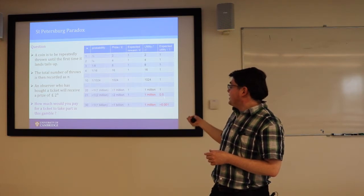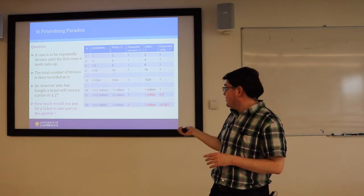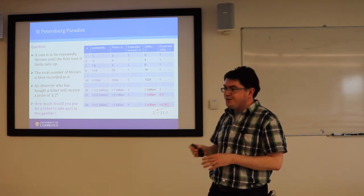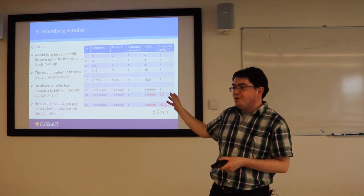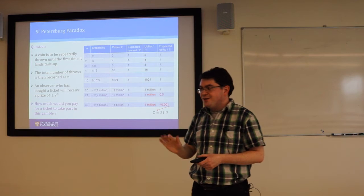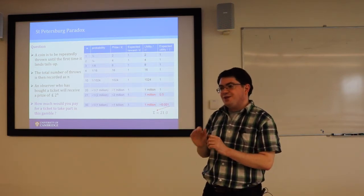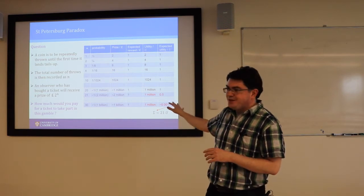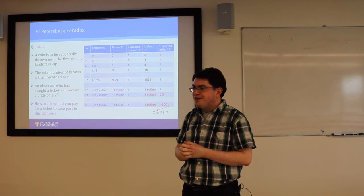And then when you try to add up the expected utility, you get a very nicely convergent series, which quickly converges to 21 utility units. So that's the value of the gamble if your greed saturates at a million quid. If you're greedier than that, and the answer to the question does depend on your capacity for greed, if you can imagine enjoying a billion pounds, then you might be willing to pay as much as 30 pounds for the ticket. But not any more than that.